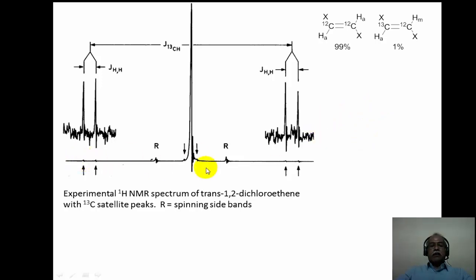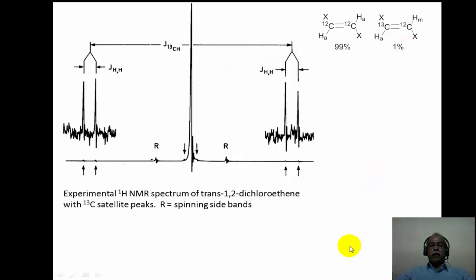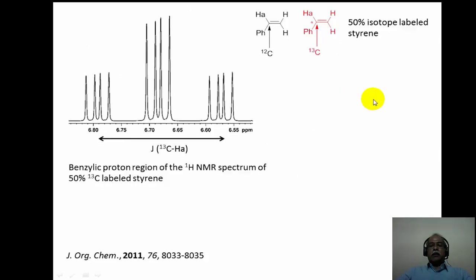The satellite peaks are very weak since only 1% of the sample contains carbon-13 labeling, requiring many scans to improve signal-to-noise ratio. The carbon-13 J value corresponds to the large gap and the H-H J value is the smaller gap. Once the H-H J value is obtained, one can tell whether it is a cis or trans isomer: the trans isomer typically has J between 15–18 Hz, while the cis isomer has J around 10–12 Hz. This illustrates indirectly deriving J values from carbon-13 satellite spectra to determine stereochemistry.